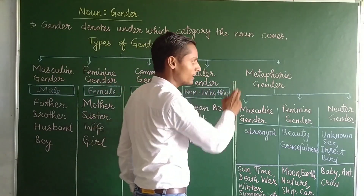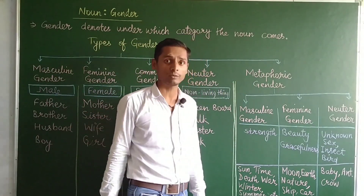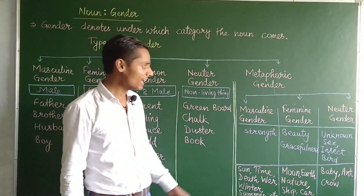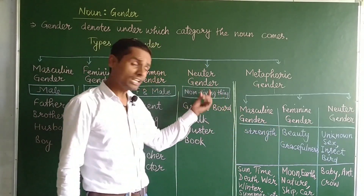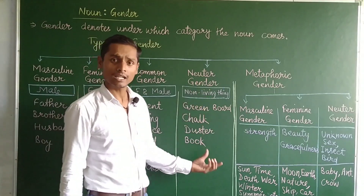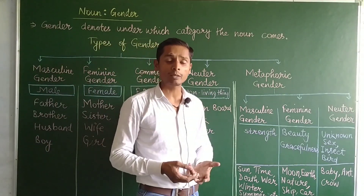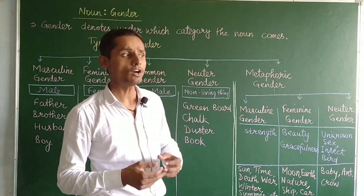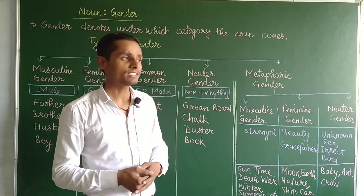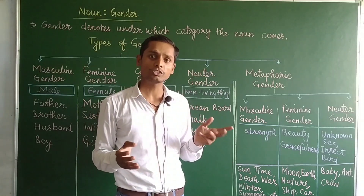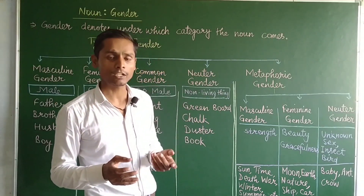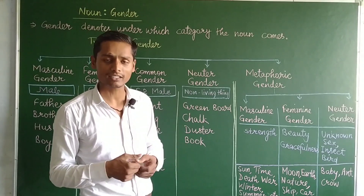The last type is metaphoric gender, which is made by metaphor and is used in poetry. Even though something is a non-living or neutral thing, a poet uses imagination to assign it a male or female category. For example, the moon or sun may be described as female in a poem.